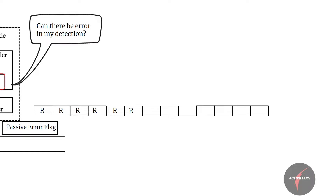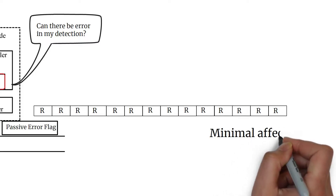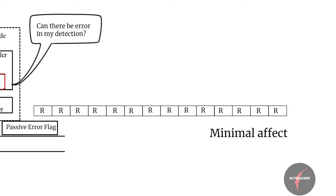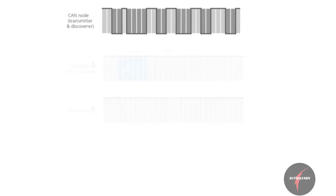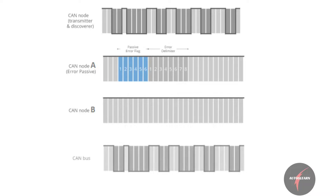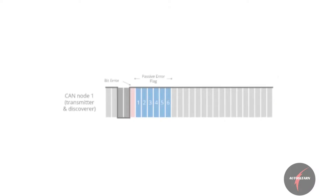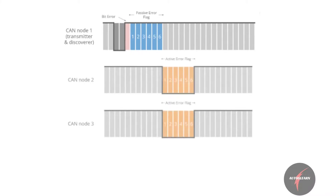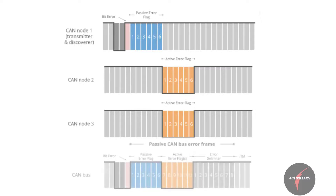The passive error flag is followed by 8 bits of error delimiter, which are also recessive bits. Since the error flags are recessive, the effect of these error flags is minimal on the message transmitted on the network, as the error flag gets overwritten by the transmitted message. For example, if CAN node A sends a passive error flag, the actual message reflected on the network will be in sync with the transmitted message and not the error flag. However, if the transmitter itself is sending the passive error flag — a consecutive sequence of six recessive bits — this will be detected as a bit stuffing error by all CAN nodes, and those nodes will raise an active error flag of six dominant bits.